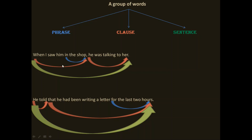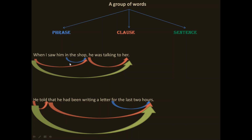Let's take the first example: 'When I saw him in the shop, he was talking to her.' In this sentence, we can see 'in the shop' — it is a group of words, but if we take 'in the shop' separately, it doesn't have its own entity and will not give complete meaning. It is a part of a sentence and it does not have a subject and a predicate of its own. So this is a phrase.